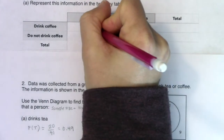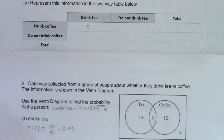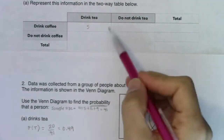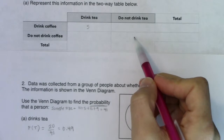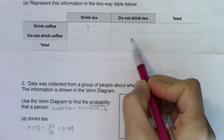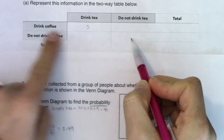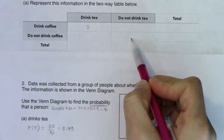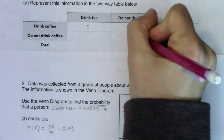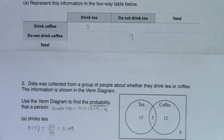When we refer back to the Venn diagram, that's these five folks, so I'm going to put the number five here. I like to do the diagonals first. If I put my pencil in the cell where I do not drink tea and I do not drink coffee — those are the neither folks — and from the Venn diagram there are nine of them. So I'm going to put nine in my table.